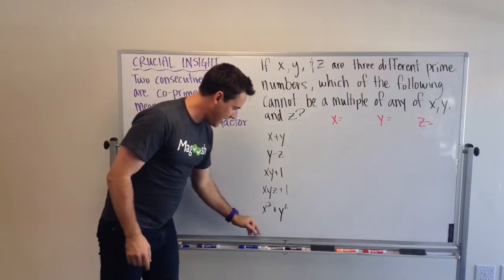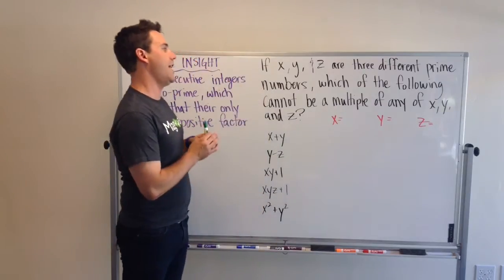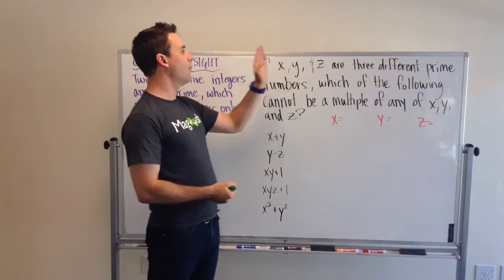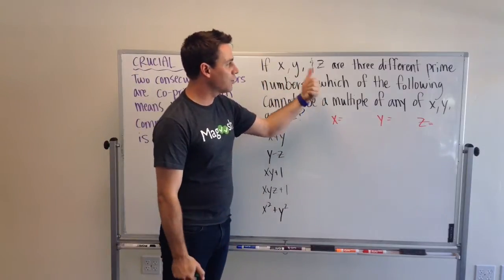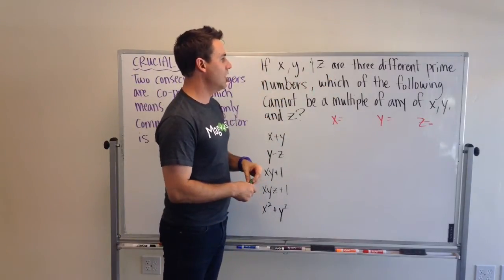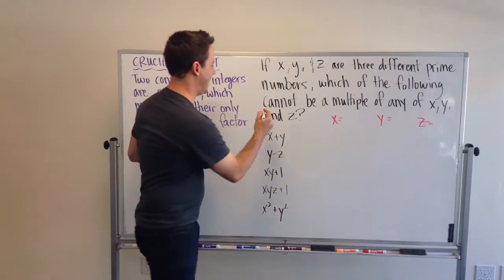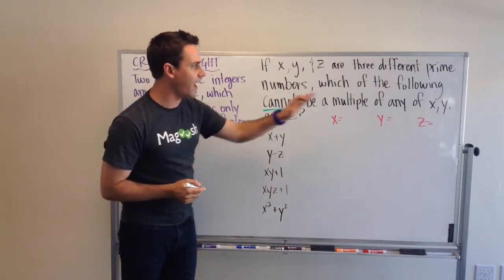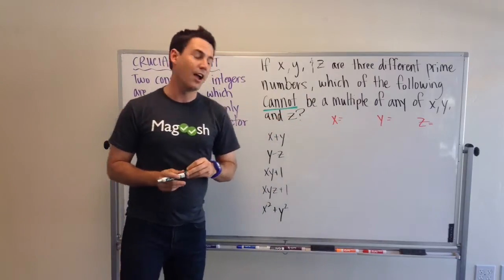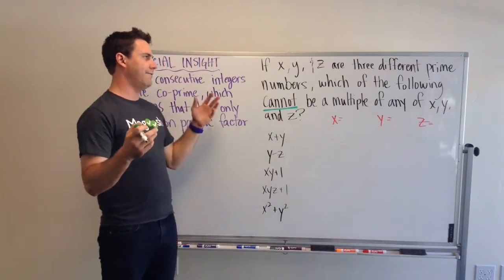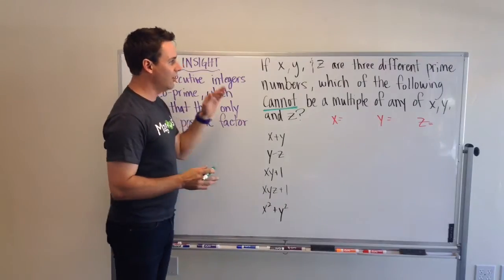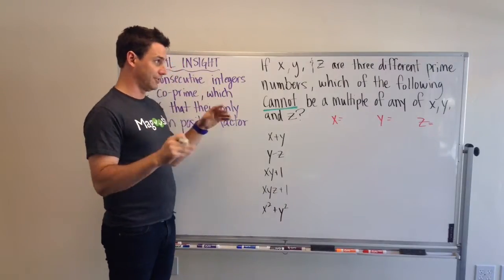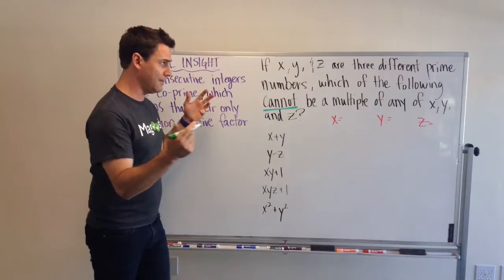I need a pen, let's see, it's a green one. So, the question says, if x, y, and z are three different prime numbers, which of the following cannot be a multiple of any of x, y, and z? Alright, so let's kind of read that first, and you're like, what? So, sometimes it's useful to just go back through and pull out the important details.